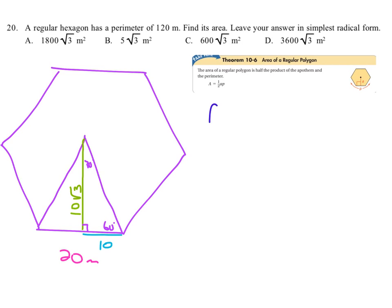So if we write that down, area equals one-half the apothem length times the perimeter, and we know that the apothem length, because we just figured it out, is 10 root 3, and we know the perimeter, because they told us, is 120.